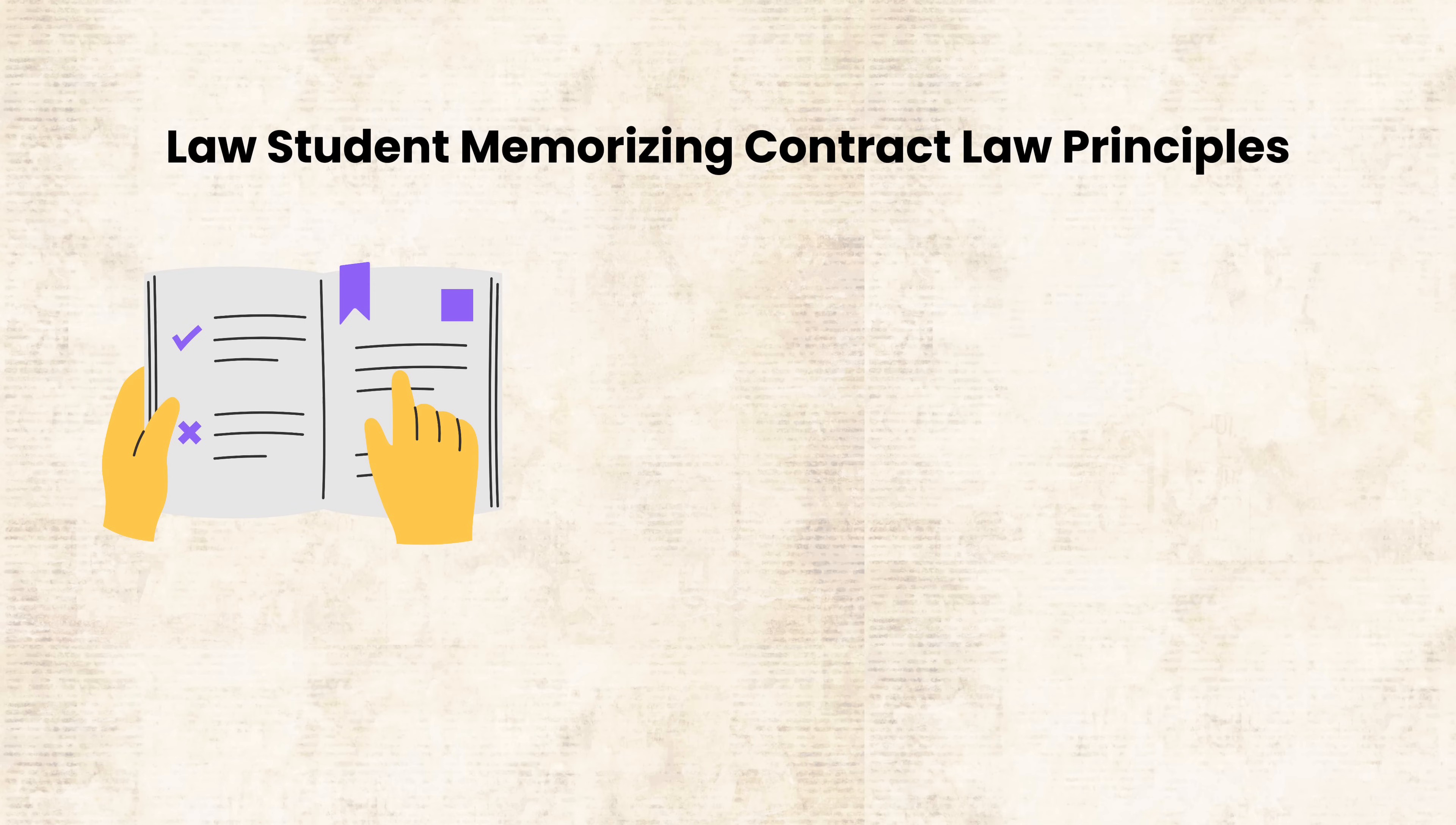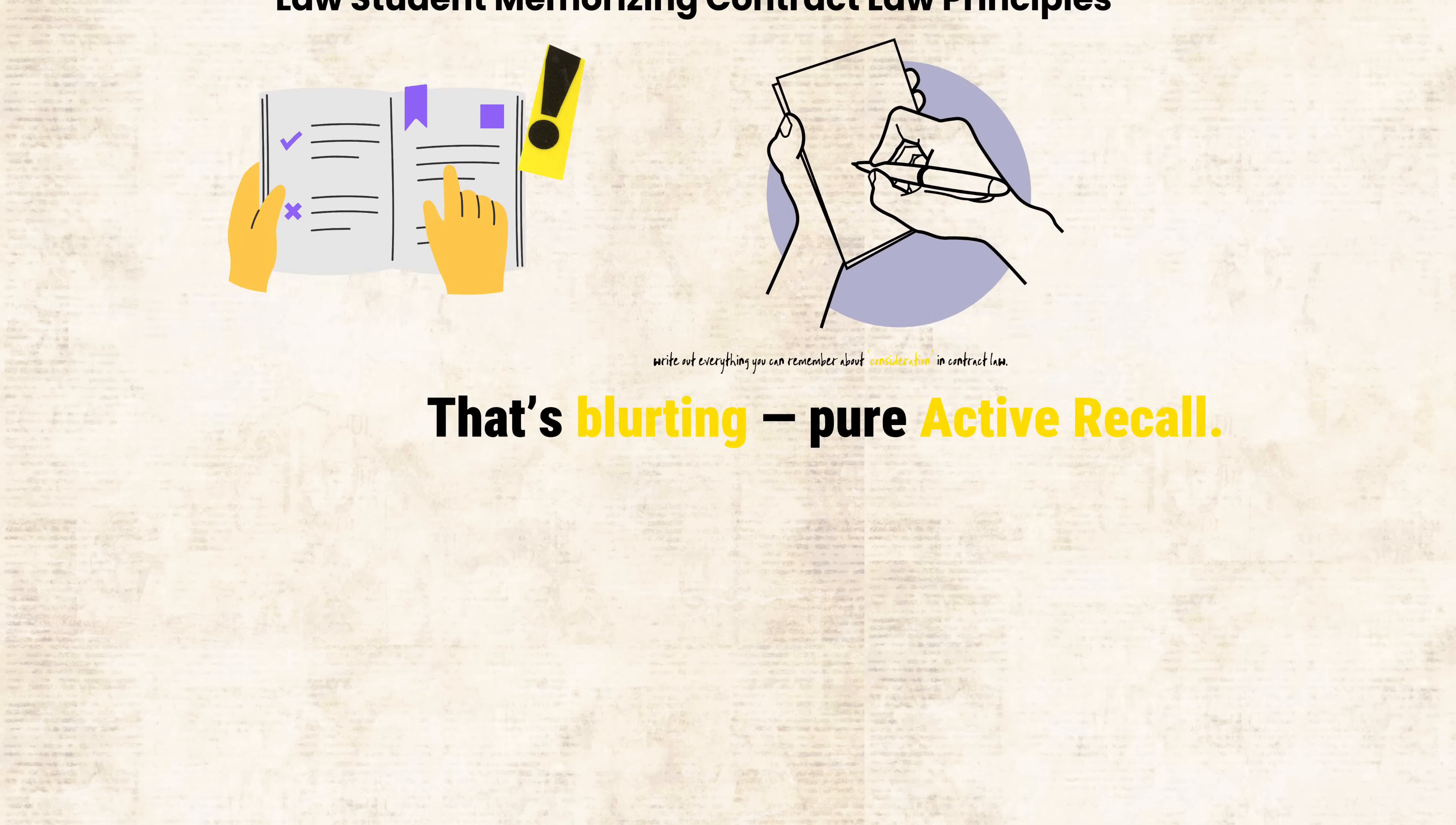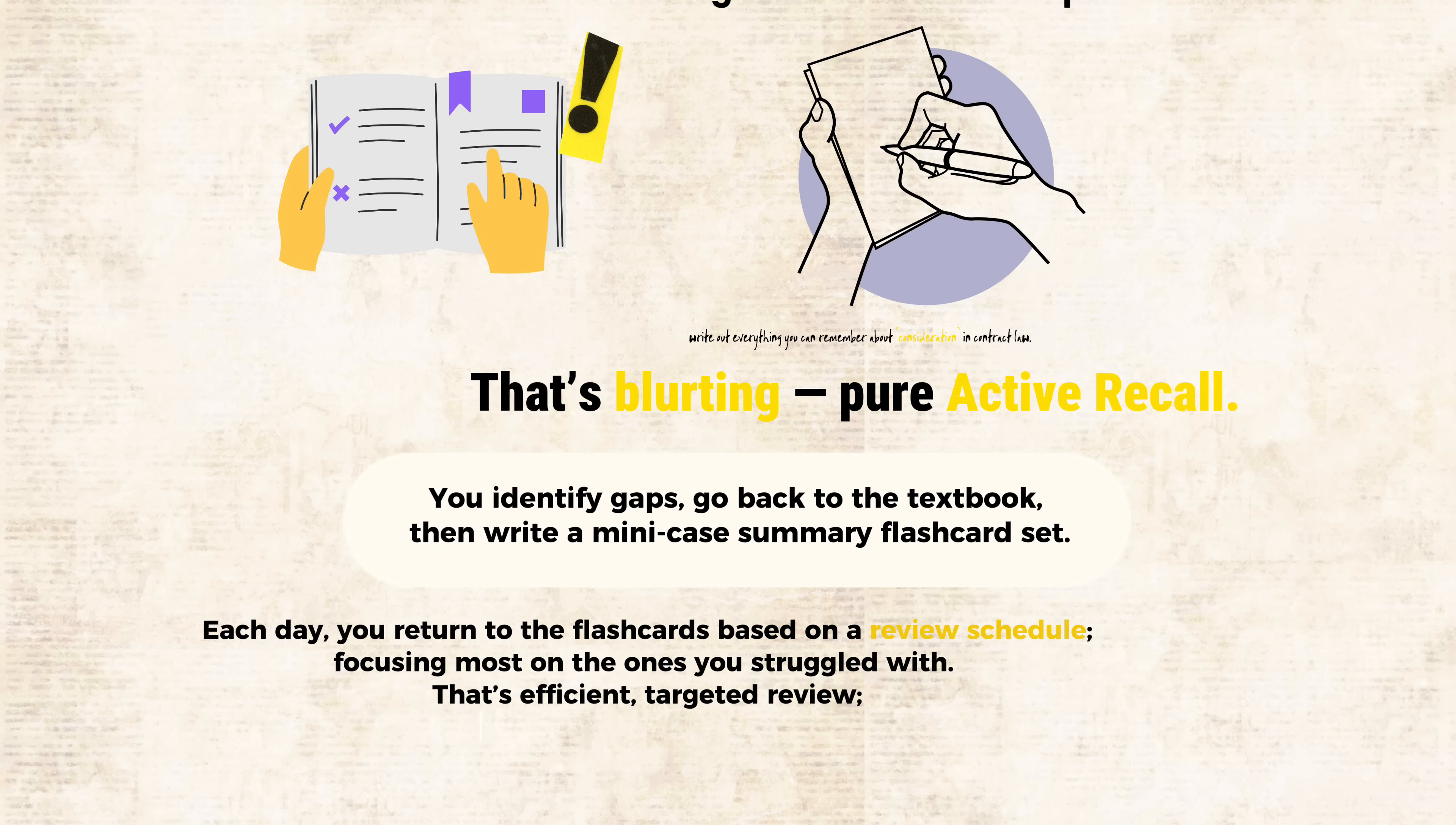You're learning key cases or statutes. You don't just reread your notes. Instead, you grab a whiteboard and write out everything you can remember about consideration in contract law. That's blurting, pure active recall. You identify gaps, go back to the textbook, then write a mini case summary flashcard set. Each day, you return to the flashcards based on a review schedule, focusing most on the ones you struggled with. That's efficient, targeted review, not rereading everything.